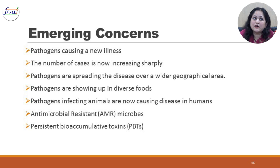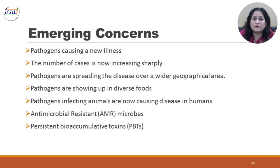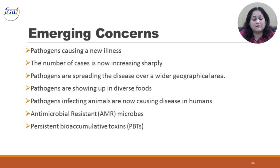We now come to emerging concerns regarding food safety. To classify something as an emerging concern, one of the following should apply: the pathogen is causing a new illness, the number of cases is increasing sharply, pathogens are spreading over a wider geographical area, pathogens are showing up in diverse foods where they had never been detected before, pathogens which were earlier infecting animals are now causing disease in humans, or there are antimicrobial resistant microbes. Also of concern is the increase in persistent bioaccumulative toxins in our environment and food.